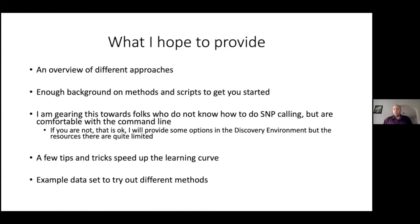I am gearing this towards folks who may not know how to do SNP calling ahead of time, but who are comfortable with the command line. If that's not the case, it's okay — we will provide some options in the discovery environment on CyVerse. However, those resources are quite limited, so they'll work on a small data set but may not work on bigger projects. I'm also going to hopefully provide a few tips and tricks to speed up the learning curve, as well as an example data set and scripts to try out different methods with CyVerse or on your local machines.